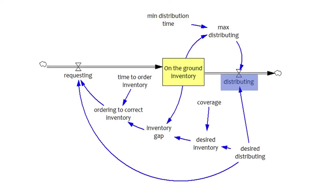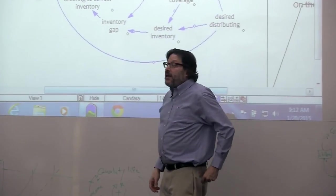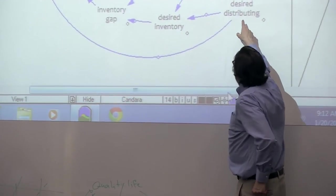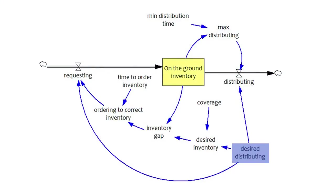And then we distribute it and it leaves the inventory. What do we request? Well, we request whatever we wish to be distributing. That's part of the request. And then we also request, if our inventory is less than our desired inventory, then we request a correction to the inventory.